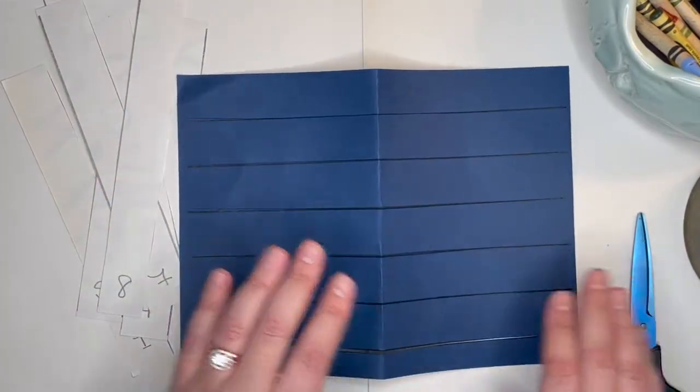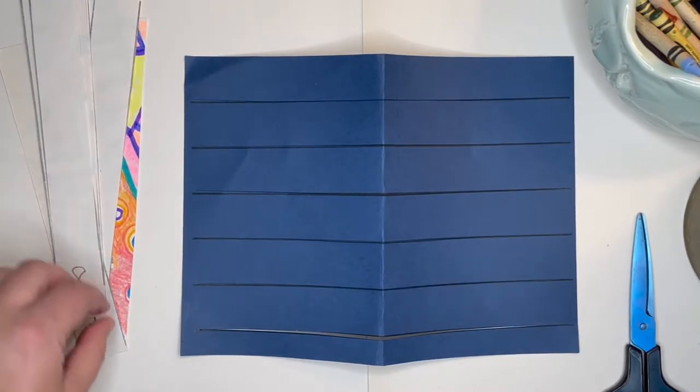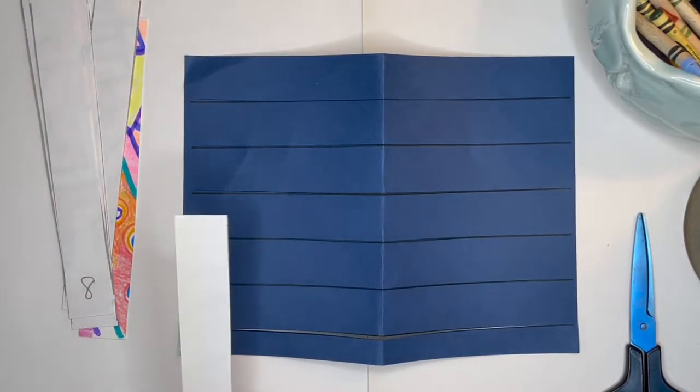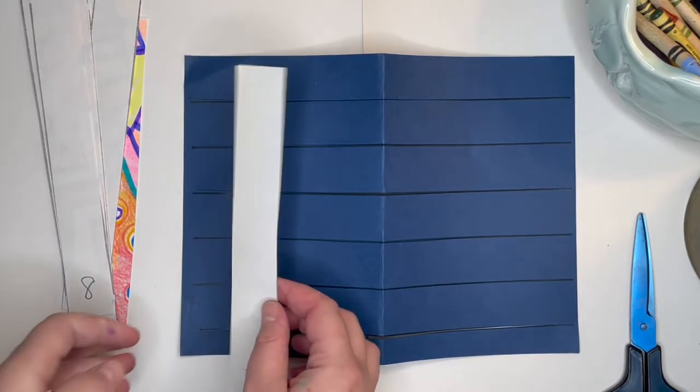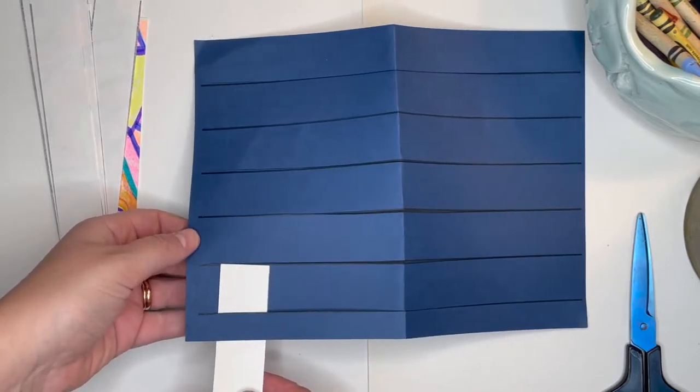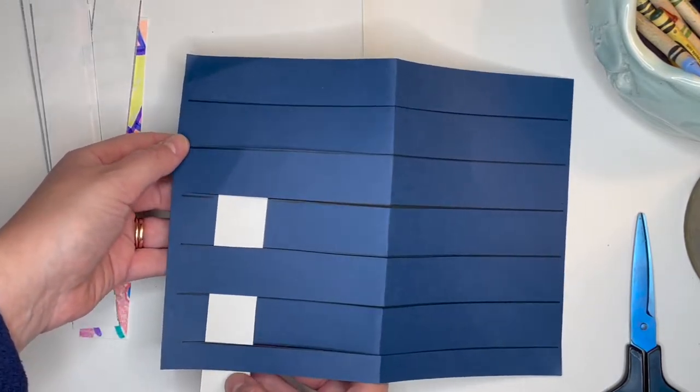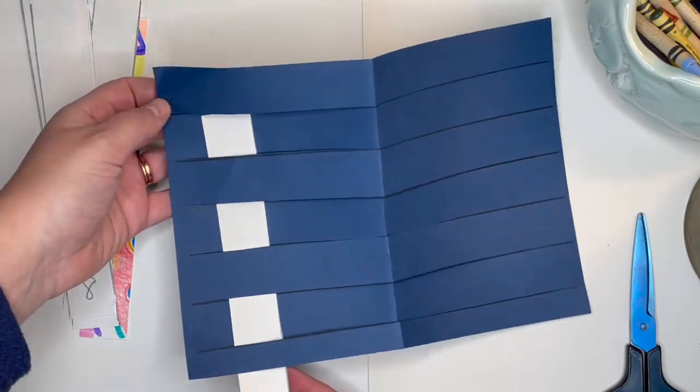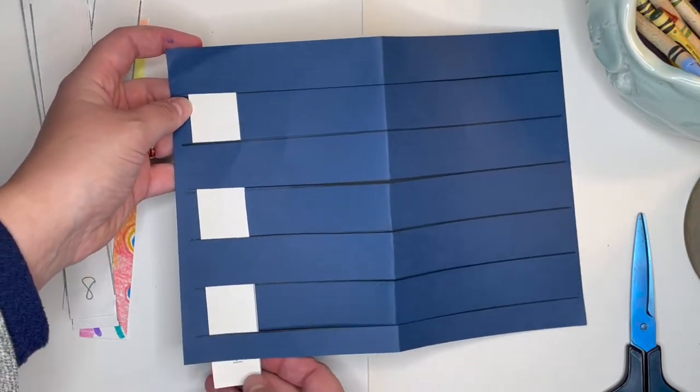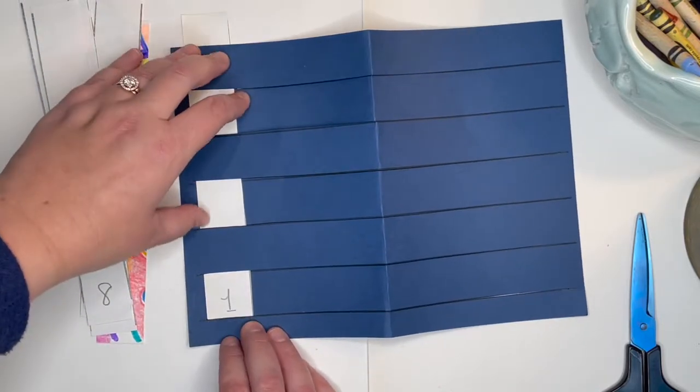Okay boys and girls, we are ready to start our weaving. Let's begin with strip number one. Keep your strips with the white side and numbers showing. Begin by sneaking your strip underneath every other blue paper until you have your number one showing.